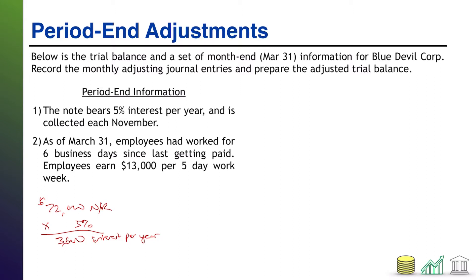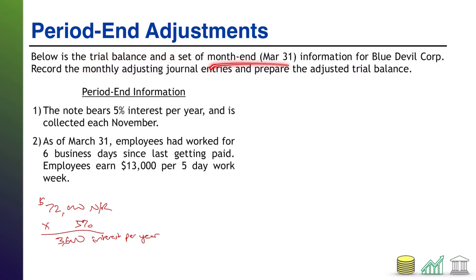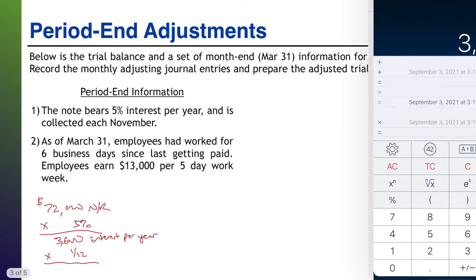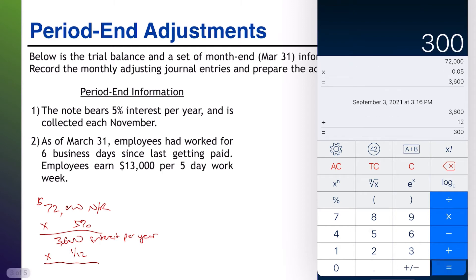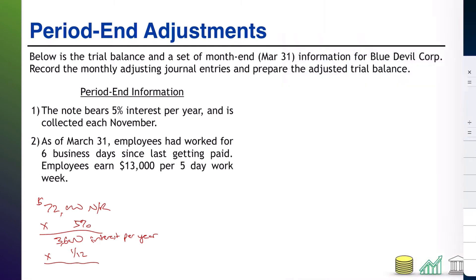We know that we are only preparing the monthly adjusting journal entries for the month of March. Therefore, we only need one month's worth of interest — times one over 12 months. That's our partial year, and that is going to come out to $300. And that is the monthly interest.